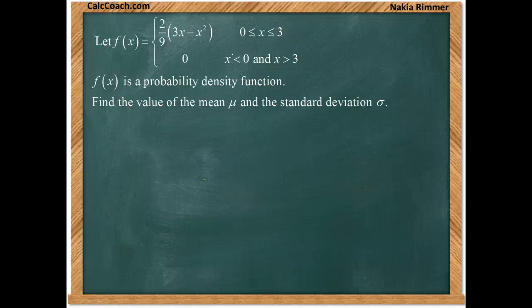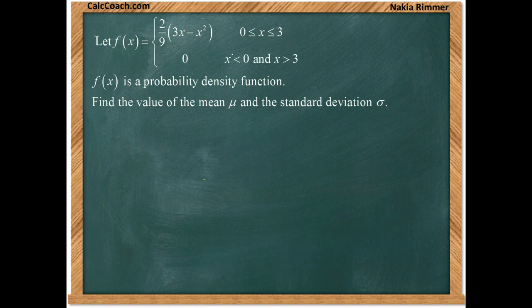Let f of x equal 2 ninths times the quantity of 3x minus x squared as long as x is between 0 and 3, and 0 otherwise. So 0 for x is less than 0 and more than 3.